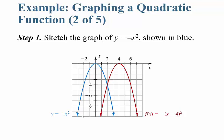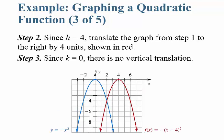So sketching negative x squared — that's just negative one times x squared, shown in blue — you plug in some values and notice it flips over like an upside-down U. Then since h equals 4, translate the graph to the right 4 units. Since k equals 0, there's no moving up or down.